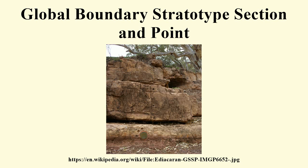Once a GSSP boundary has been agreed upon, a golden spike is driven into the geologic section to mark the precise boundary for future geologists. The first stratigraphic boundary was defined in 1977 by identifying the Silurian–Devonian boundary with a bronze plaque at a locality called Klonk, northeast of the village of Suchomasty in the Czech Republic.